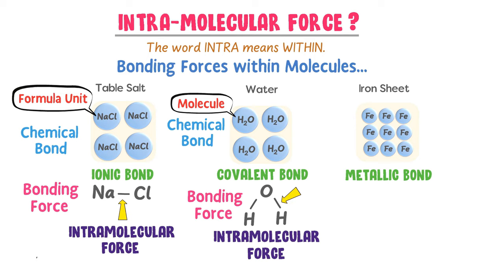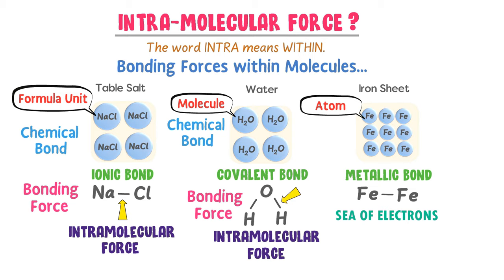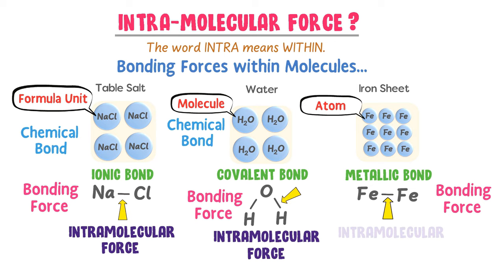Thirdly, the smallest unit of metallic compounds is an atom, like an iron atom. Metallic bond is formed due to a sea of electrons and positive ions within the lattice. So the bonding force within the iron lattice is called an intramolecular force. Here intramolecular force exists within the lattice.